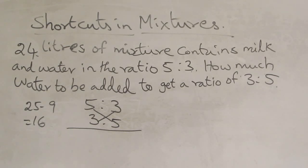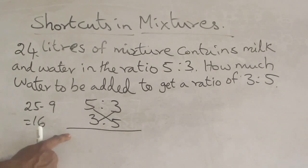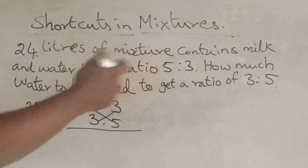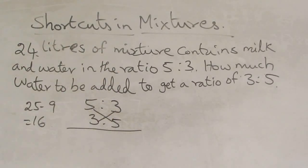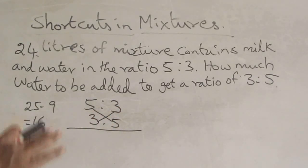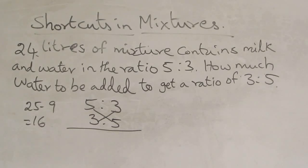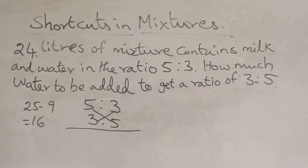If you look at ratios and cross multiply, you can see the difference. This is the method of elimination. This is the answer in 5 seconds or 10 seconds. If you look at my shortcut videos and subscribe, you can see your answer. Thank you.